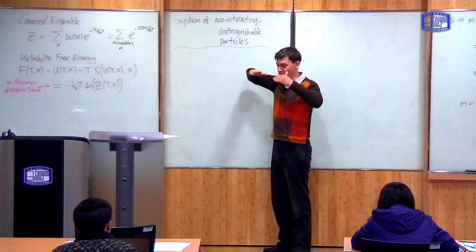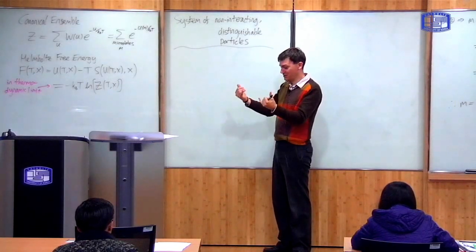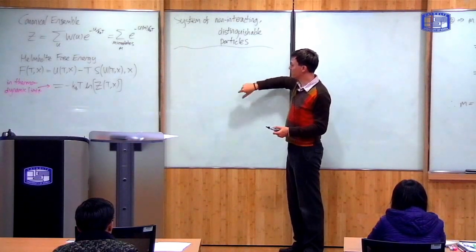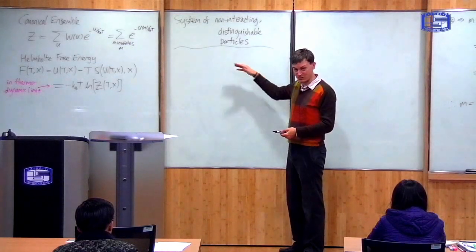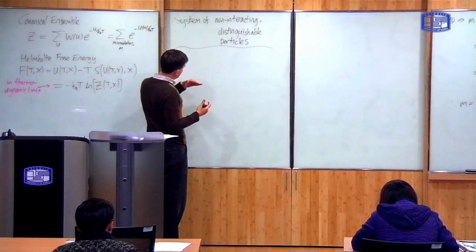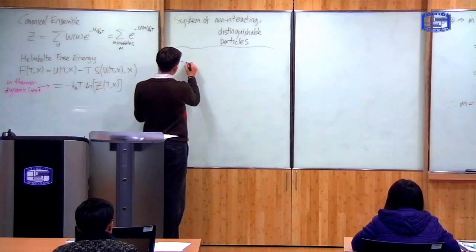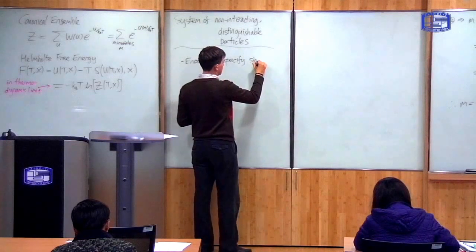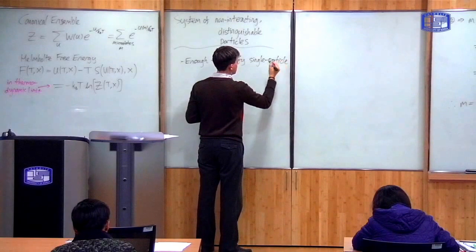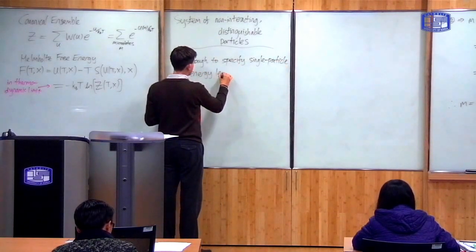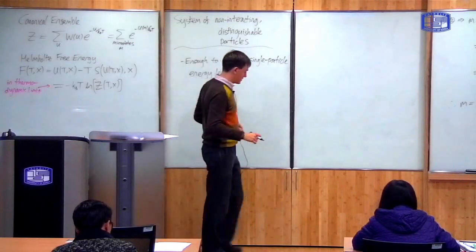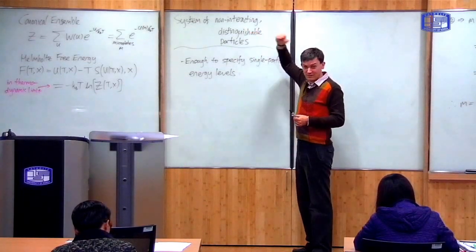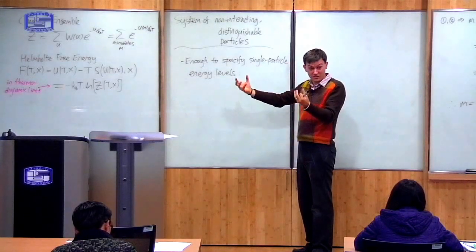Non-interacting means the energy of one particle does not affect the energy of another, so I can treat each particle as having a well-defined single particle energy. Distinguishable means that I can tell two particles apart — I can say particle one is here, particle two is there. The energy of the whole system is just a sum of the energies of each particle, and this is possible only because they're non-interacting.